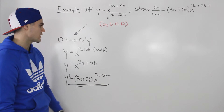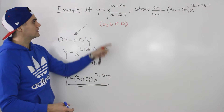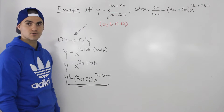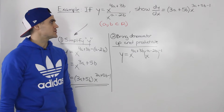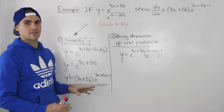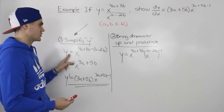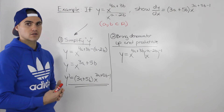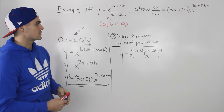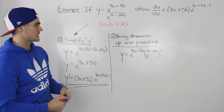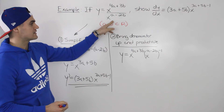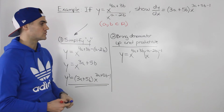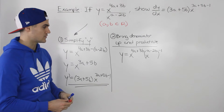Notice that this matches exactly what we needed to show. That way is one way to do the question really quickly — just simplify y, apply the power rule, and get the derivative. Now let's say your teacher gives you the same question but says you're not allowed to simplify the function y, and you have to find the derivative another way. Well, that makes the question a lot harder. So the second way is to bring that denominator up to the numerator and use the product rule.